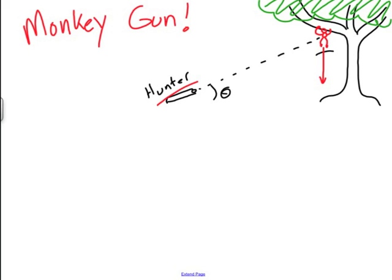But there's a new hunter in town. This hunter knows this monkey's trick. So the hunter is trying to anticipate the issue here. The hunter knows that as soon as it presses the trigger that the monkey is going to fall. And the question is where should the hunter aim?